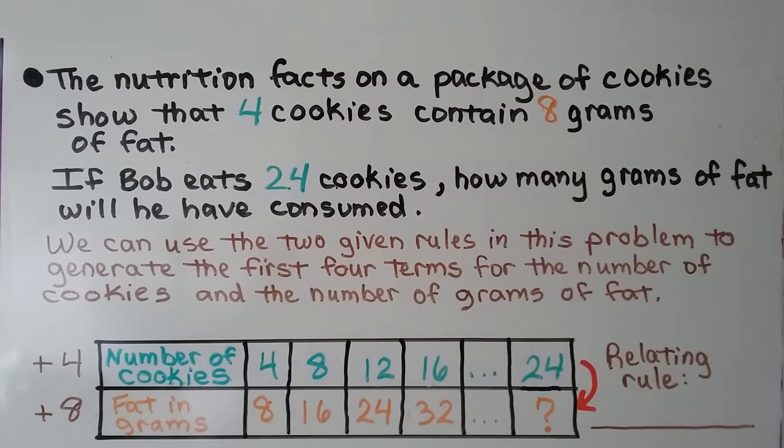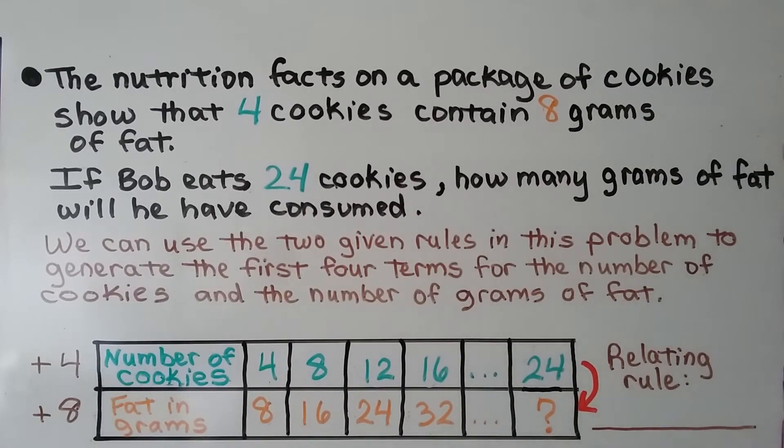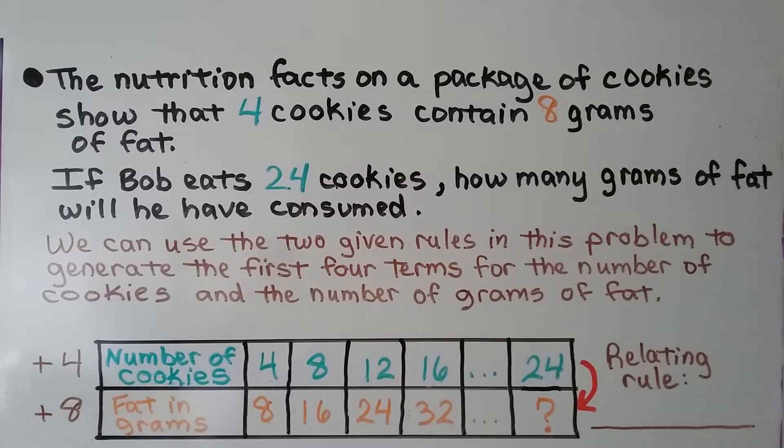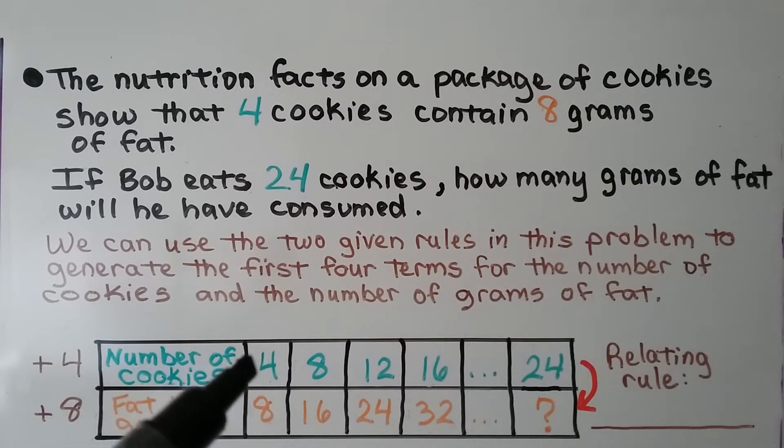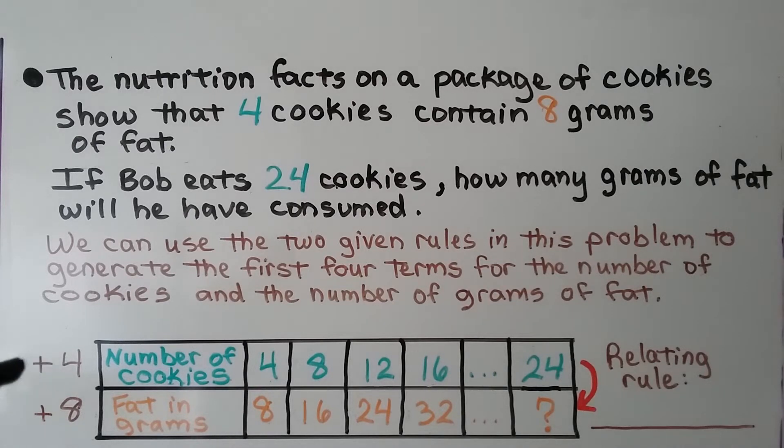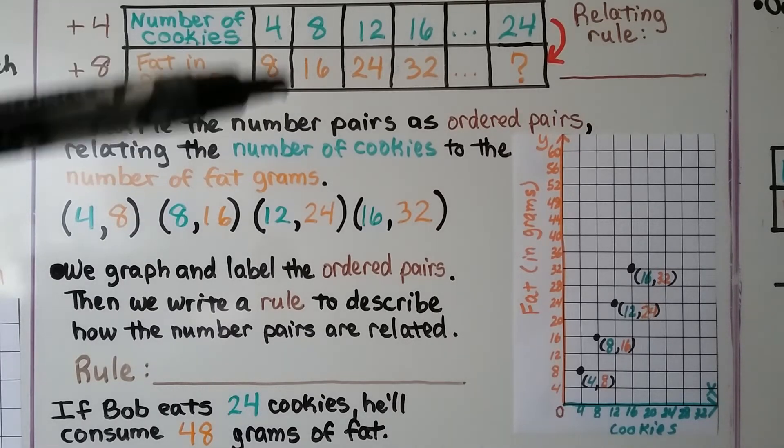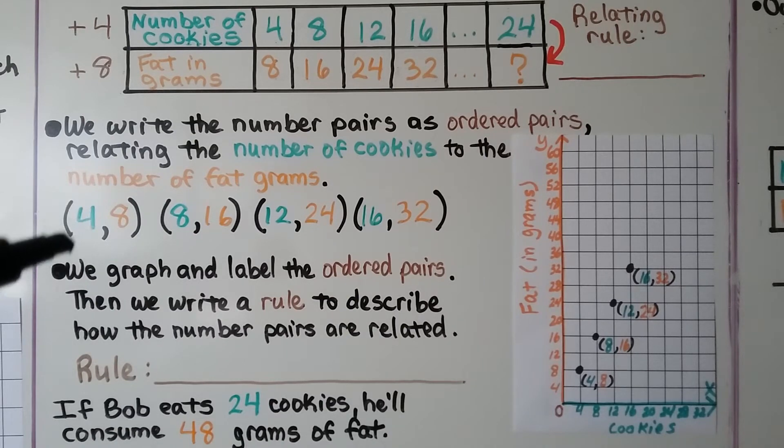The nutrition facts on a package of cookies show that four cookies contain eight grams of fat. If Bob eats 24 cookies, how many grams of fat will he have consumed? We can use the two given rules in this problem. We have four cookies is eight grams. We can use it to generate the first four terms for the number of cookies and the number of grams of fat. The number of cookies would be four. The fat grams would be eight. We would increase the number of cookie sequence by adding four. We would increase the number of fat gram sequence by adding eight. And we find the relating rule between cookies and fat grams.